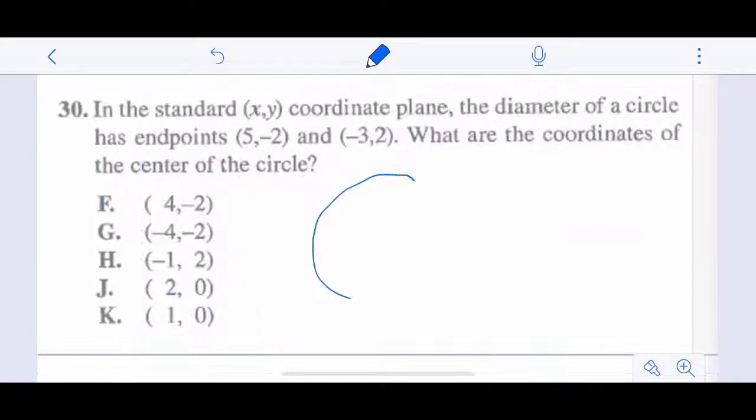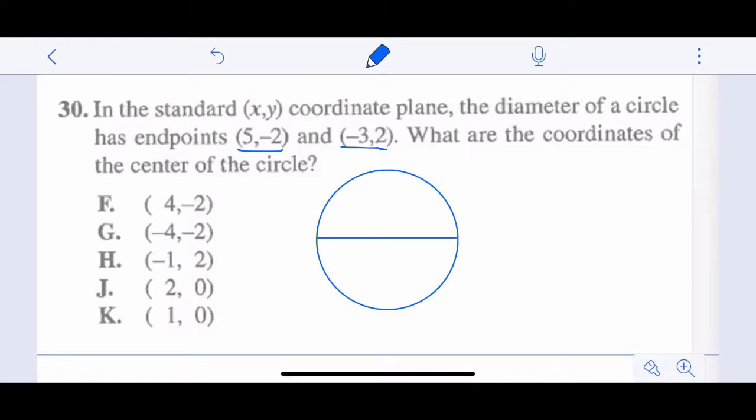Diameter of a circle, so let's draw us a circle, has endpoints 5, negative 2, and negative 3, 2. So diameter is just the distance across the center of a circle. So this side is 5, negative 2. This side is negative 3, 2. And the reason this is a question 30 is because you look at it and think, oh, this is a circle question. But it's not. It's a midpoint question.